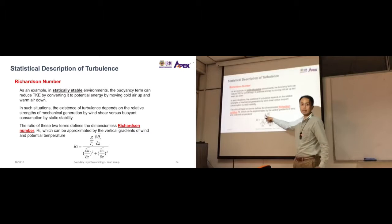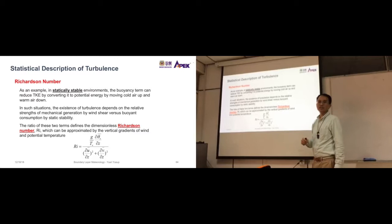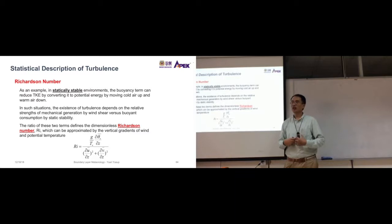Don't worry about the g over t. G is just gravity, a constant. It doesn't change. And t is temperature. And you notice that once you cancel the terms, this Richardson number becomes dimensionless. So it's a value without any units. It's just a value that shows the degree of stability of the atmosphere.